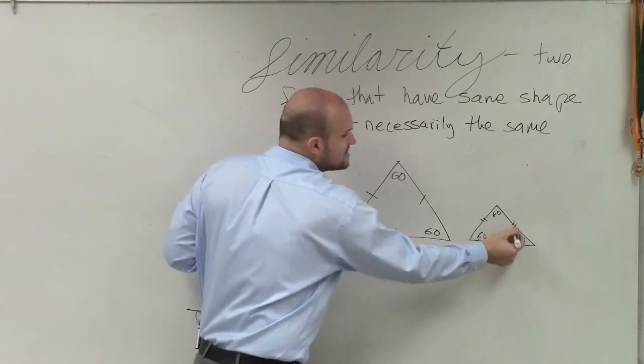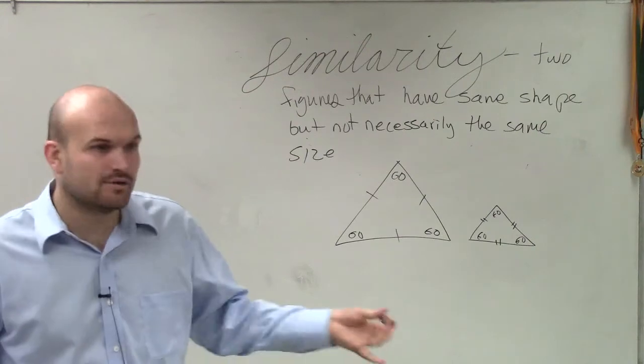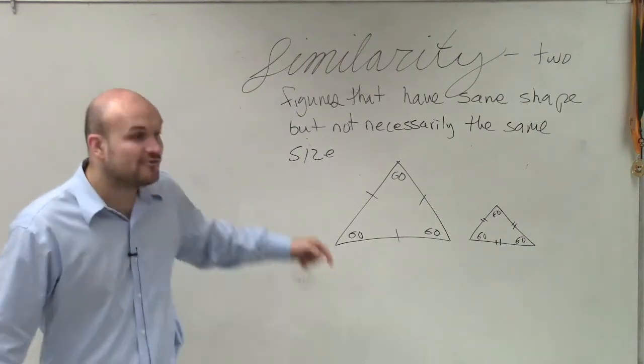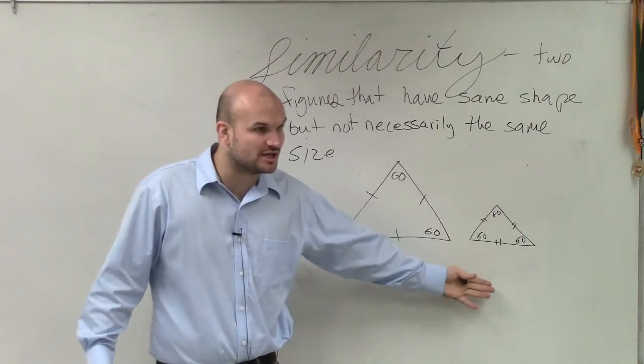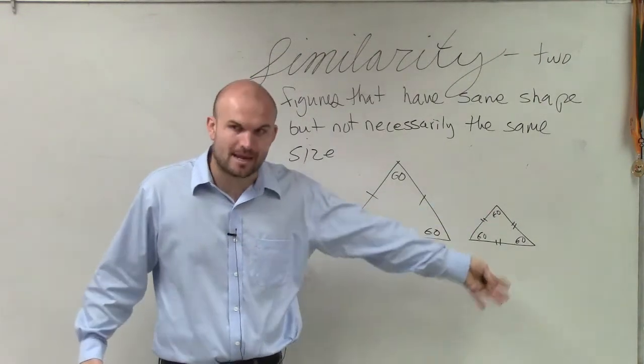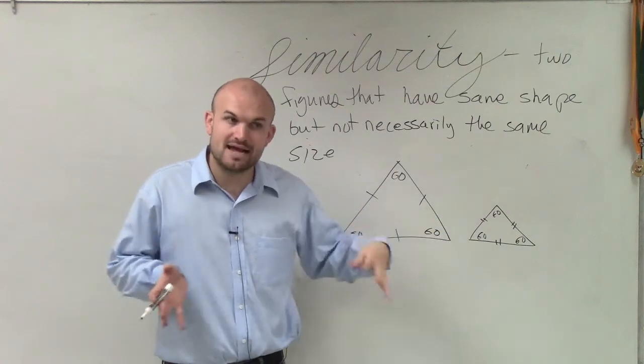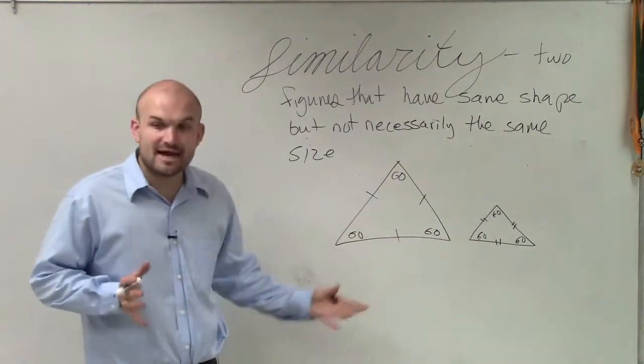So what's important for you guys to understand is the side lengths are not equal to each other. However, the angles are. And since the angles are equal to each other, they have the exact same shape because their angles are congruent. However, the side lengths are not.